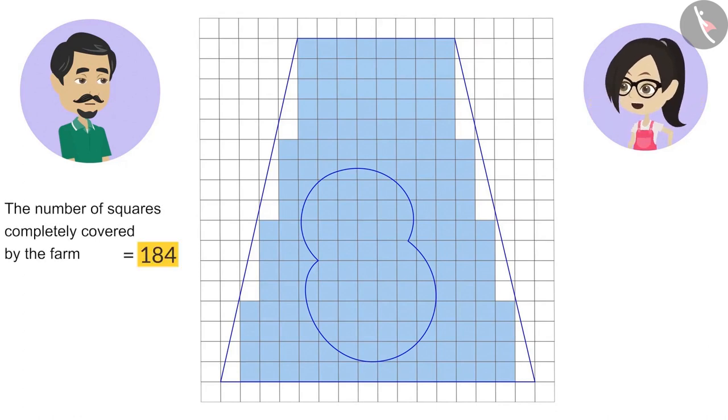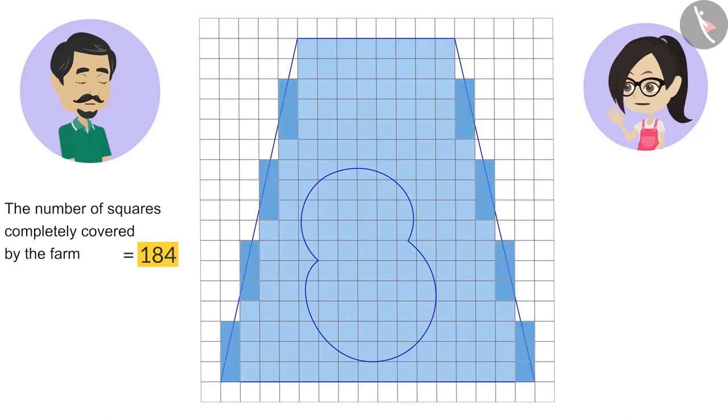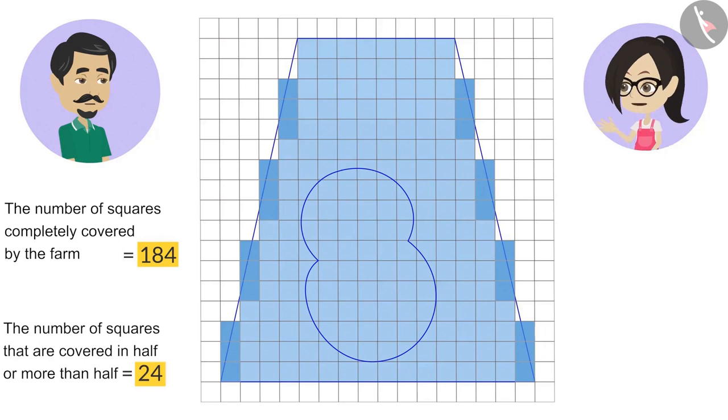Now we will count the squares that are covered in half or more than half. Their number is 24. Some of the squares are covered in half or less than half by the farm. We don't count them.